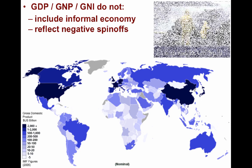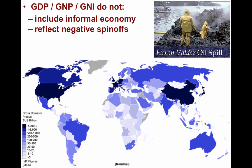Also, they do not reflect negative spin-offs. For example, in March of 1989, the Exxon Valdez, an oil tanker, ran aground on Prince William Sound in Alaska. It spilled approximately over 500,000 barrels of oil into the pristine environment. According to GNI, the billions of dollars spent on the cleanup and all the people hired to do this was counted as a positive, whereas we could all agree that the money would have been better spent on education or infrastructure.